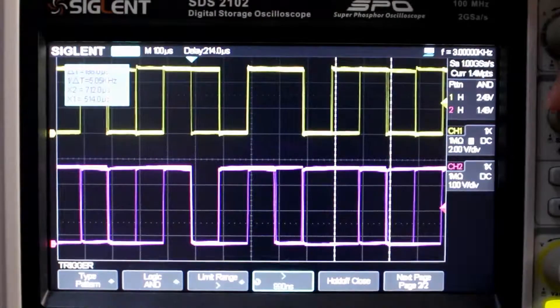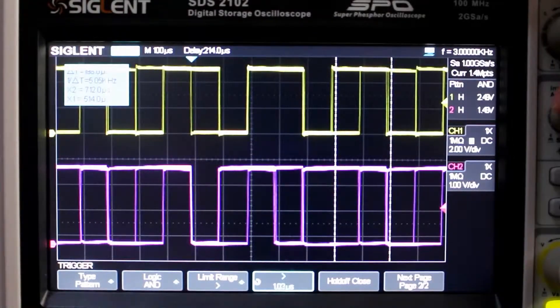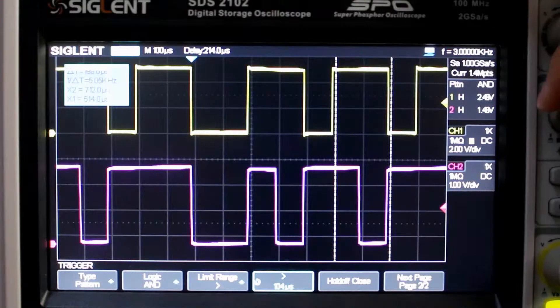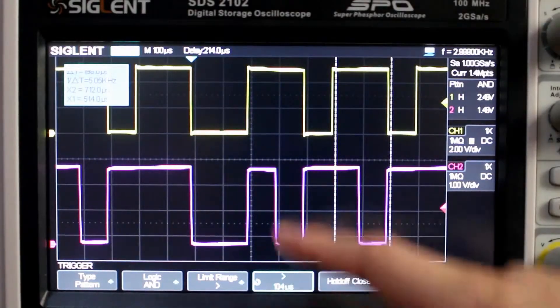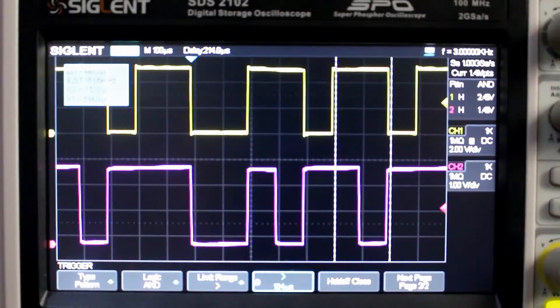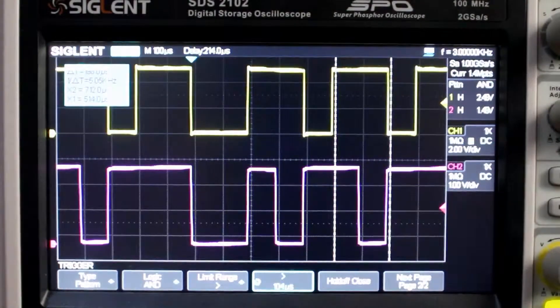Now let's set the time to around something a little over 100 should be fine, 100 microseconds. Slowly getting there, almost there. Okay, and now you can see we are triggered right at the wider one. So there you have it, that's the pattern trigger type. We triggered right where we wanted to.